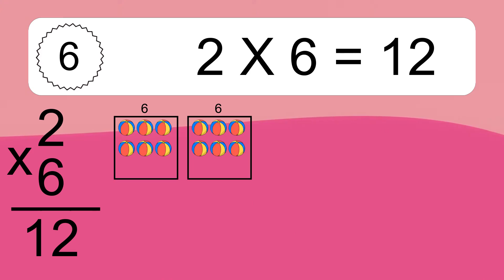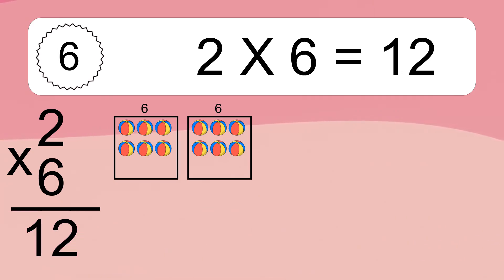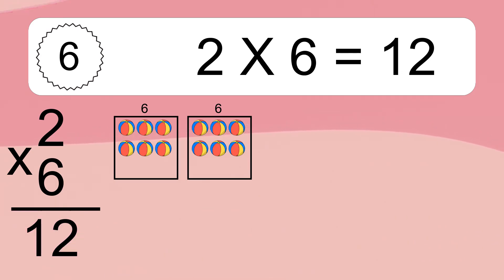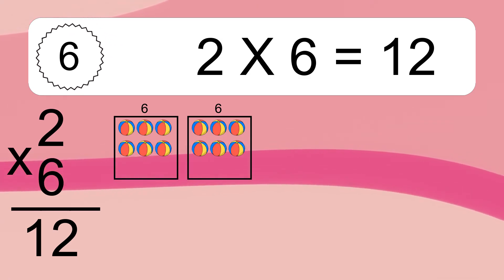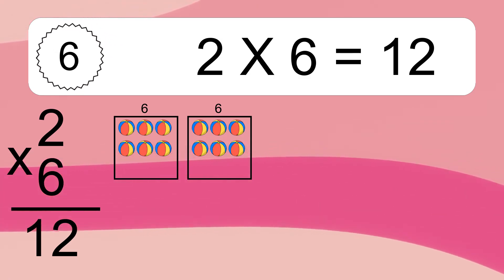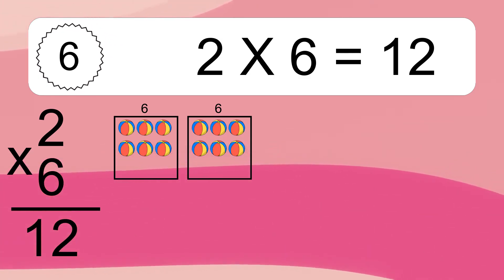2 times 6 equals what? We have 2 boxes, and each box has 6 colorful balls inside. If you count all the balls in all the boxes together, you will have 2 times 6 balls. This equals 12 balls.